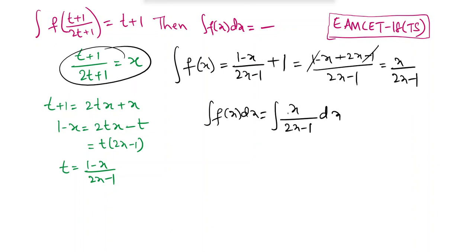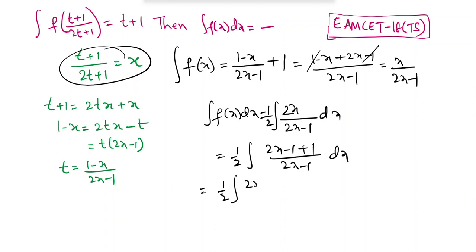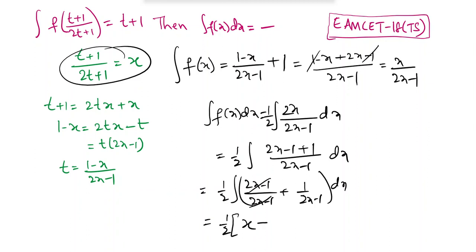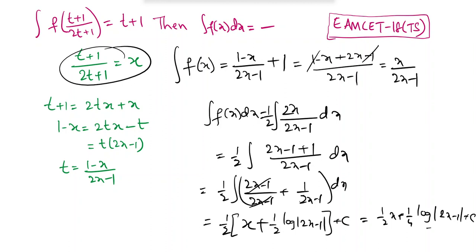Multiplying and dividing by 2: (1/2) times integration of 2x/(2x-1) dx = (1/2) times integration of (2x-1+1)/(2x-1) dx = (1/2)[integration of 1 dx + integration of 1/(2x-1) dx]. This gives (1/2)·x plus (1/2)·(1/2)·log|2x-1| plus c = x/2 plus (1/4)·log|2x-1| plus c.